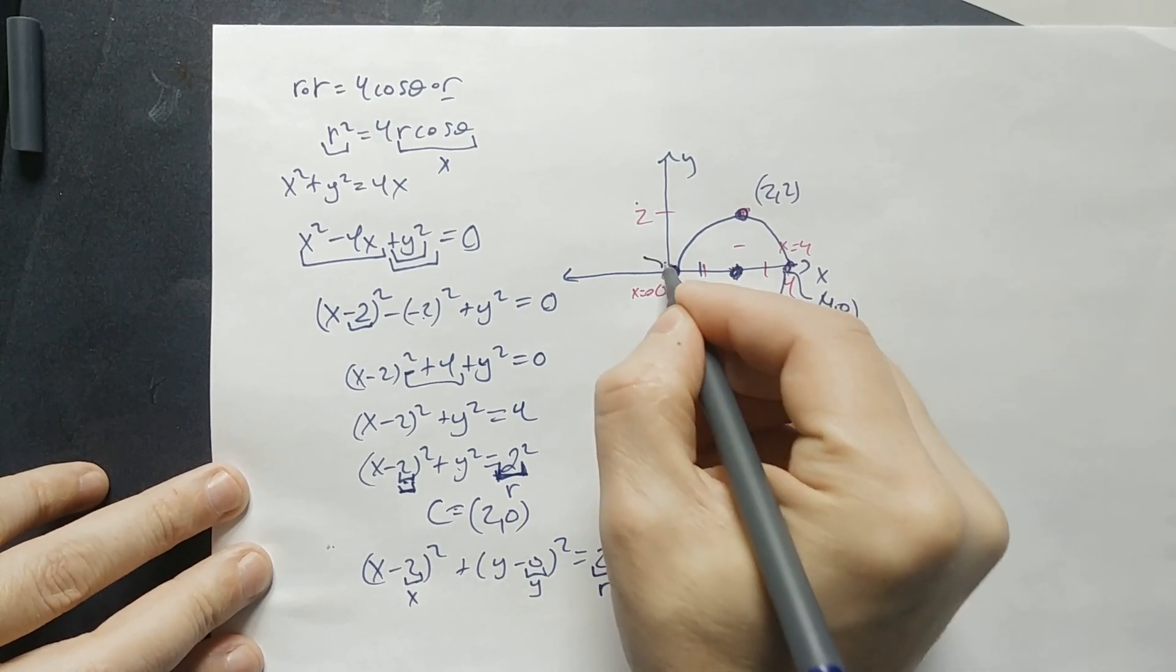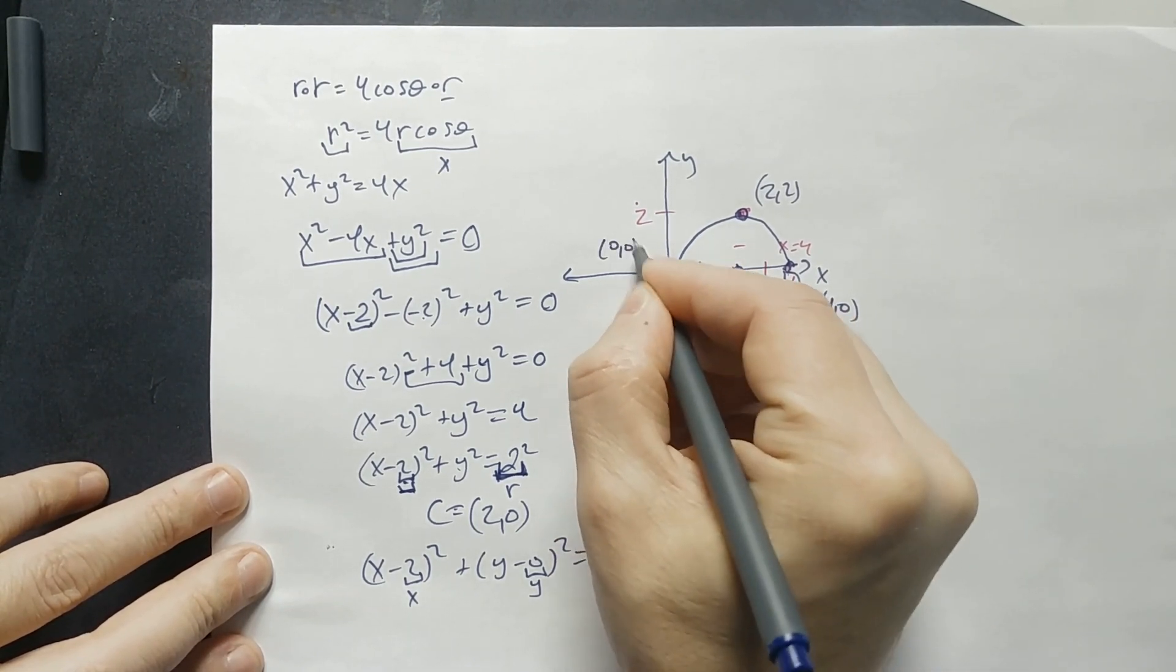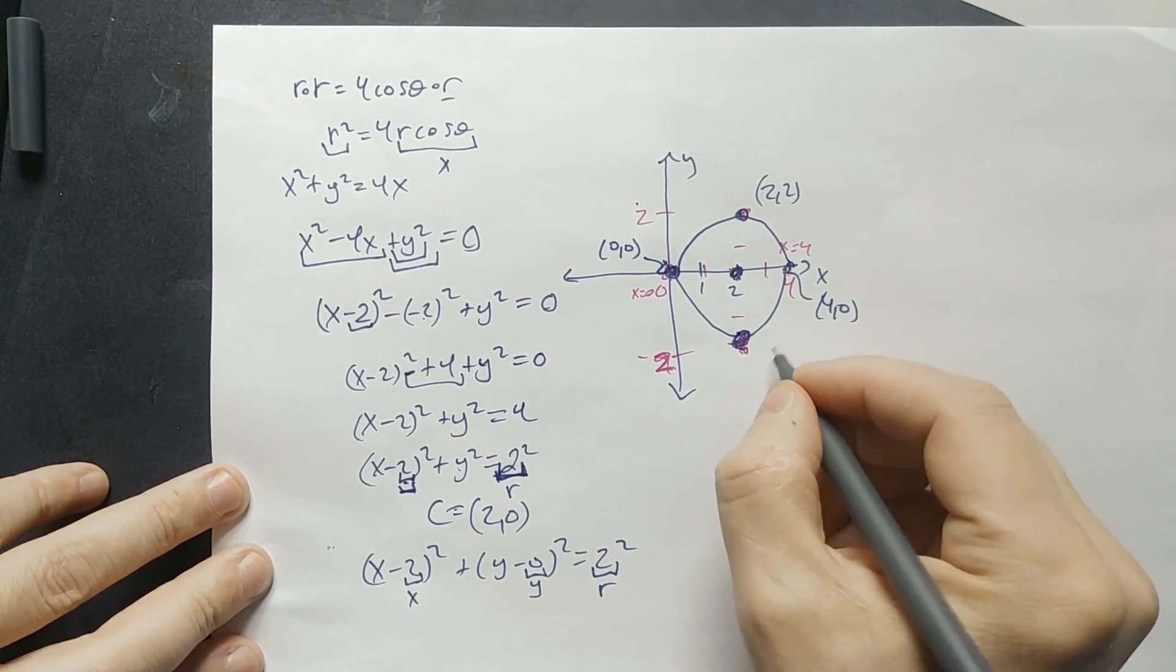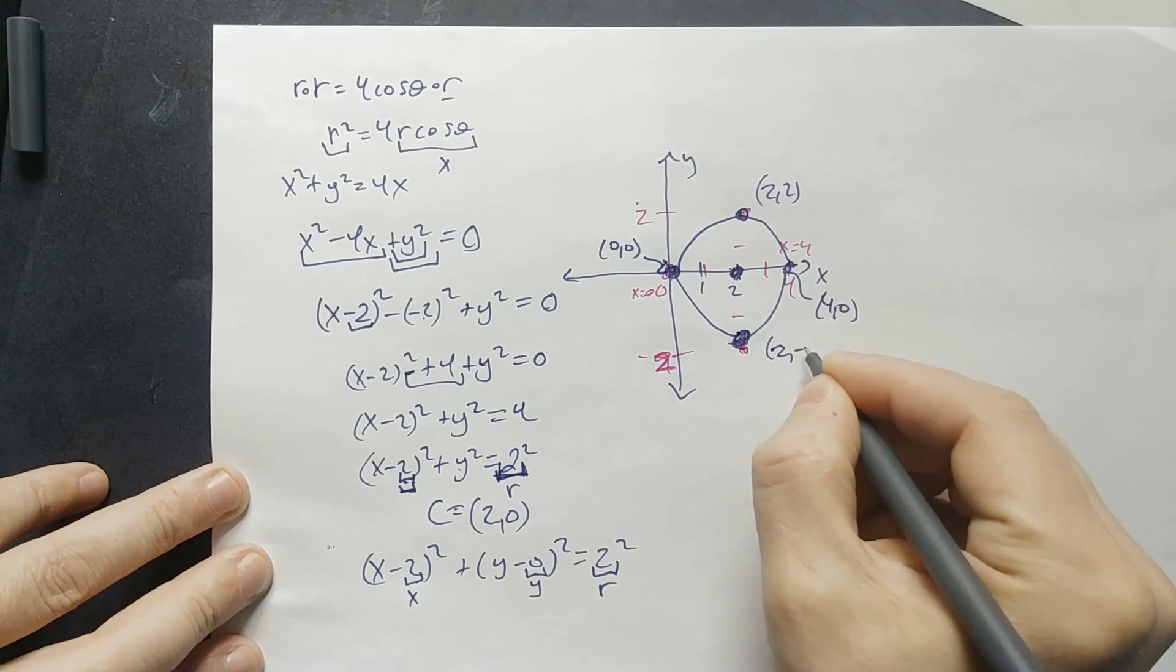That, this point, this is x equals 0, y equals 0. So to label it, you would say 0, 0. And this is 2 units below the x-axis. So this point right here, you would label as 2 and then negative 2.